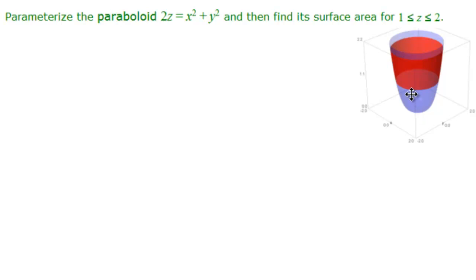And this is the part that we're interested in here, the red part, where z is between 1 and 2. So we need to parameterize this paraboloid and then find the surface area that corresponds to this red part here.